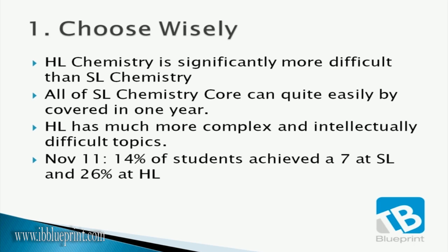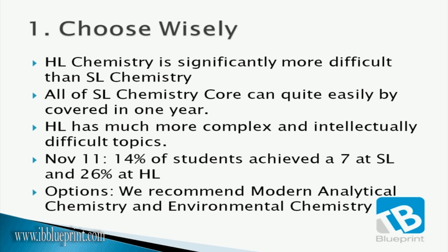Statistically, 14% of students achieved a 7 at standard level and 26% at higher level. This does not mean that higher level is easier, but rather that the stronger students choose higher level. Also note that the cutoff for a 7 at standard level is lower than at higher level. For options, we recommend Modern Analytical Chemistry and Environmental Chemistry — the two easiest topics. Modern Analytical Chemistry can be covered in the shortest time and requires the least memorization. Environmental Chemistry is easier because it is fairly syllabus-point based, and the exam questions are more regurgitation-based rather than requiring difficult problem-solving.